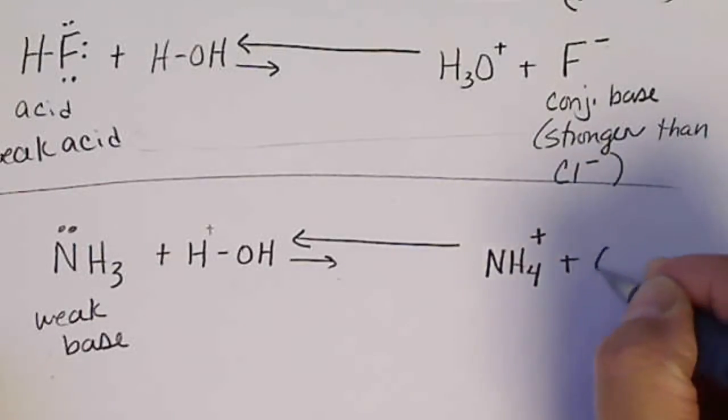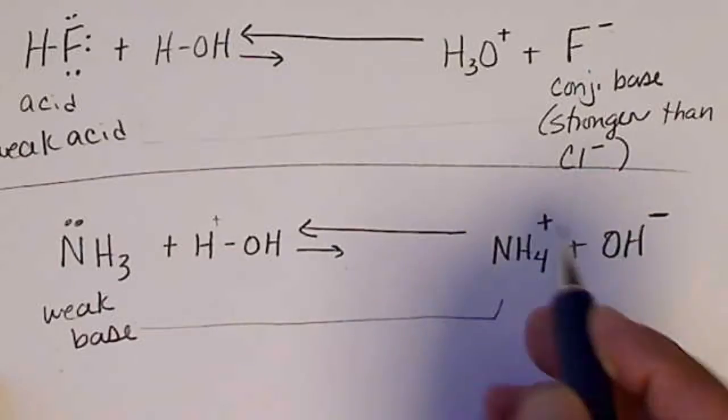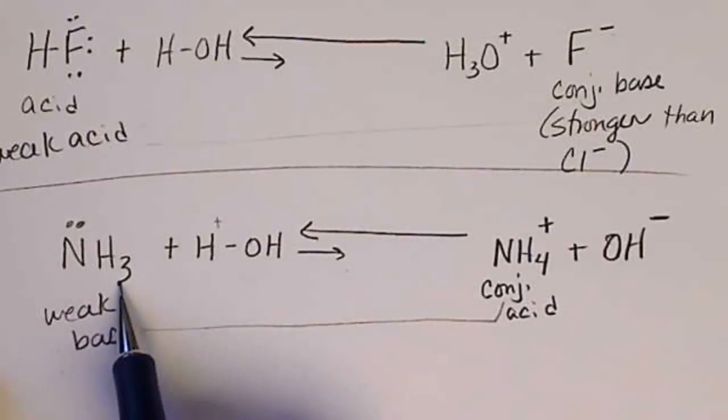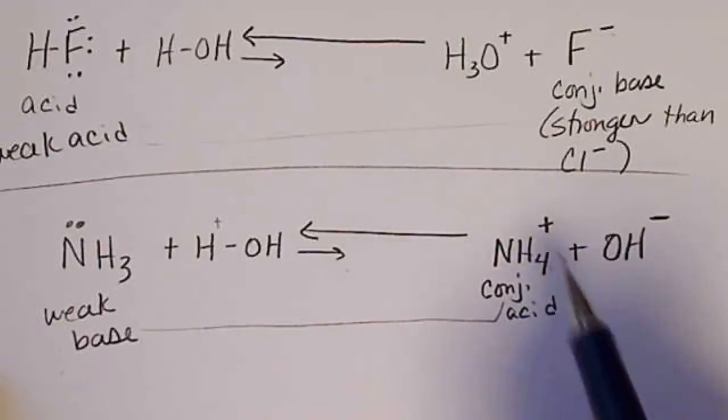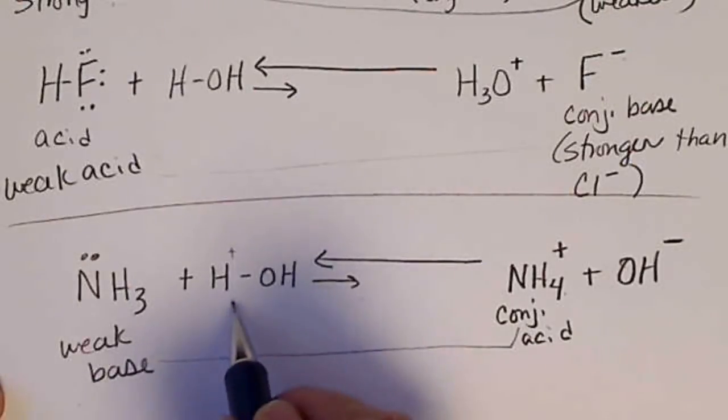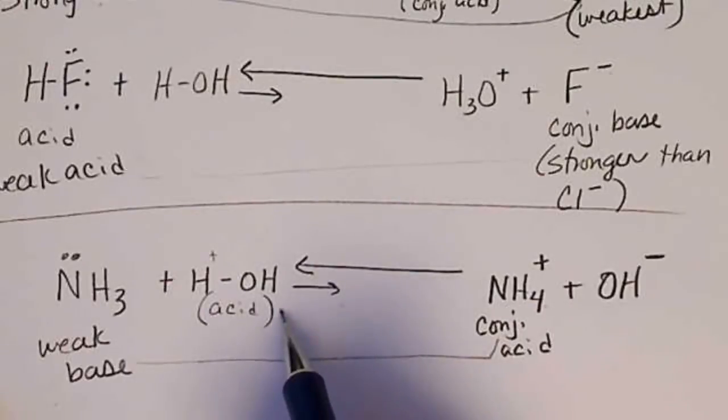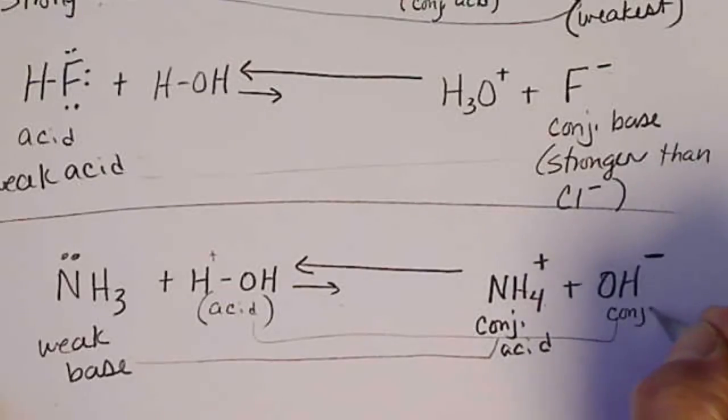So the weak base, now this is its conjugate acid. Notice a base and its conjugate acid also differ by an H+ in the formula. When water is with a base, it acts like an acid. So water's conjugate base is over here the hydroxide. So this is the conjugate base of water.